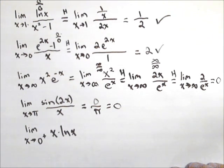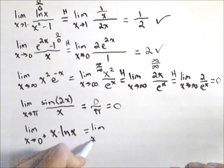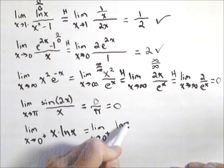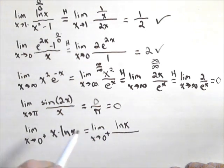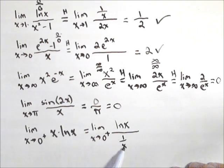So this is a zero times infinity case, which tells me that I can rewrite it if I'm careful as a zero over zero or infinity over infinity. So the way I'm going to rewrite this, I'm going to leave the ln of x on top. That's typically what we'll do over one over x. Again, notice this is just an equivalent way of writing this.